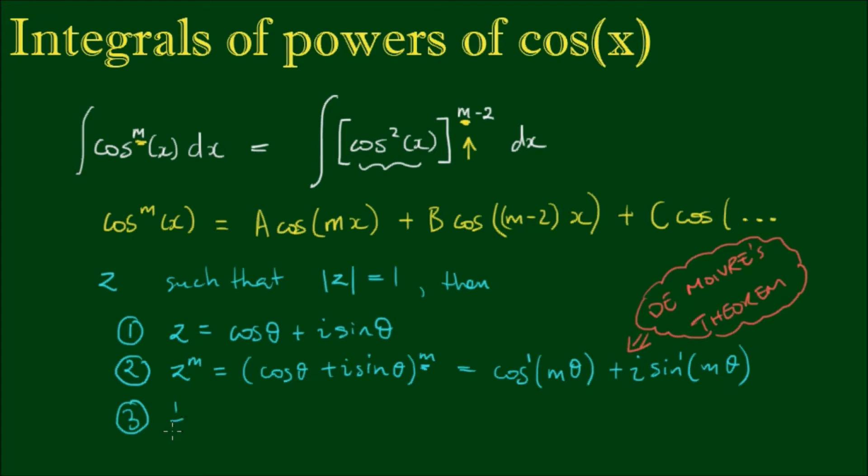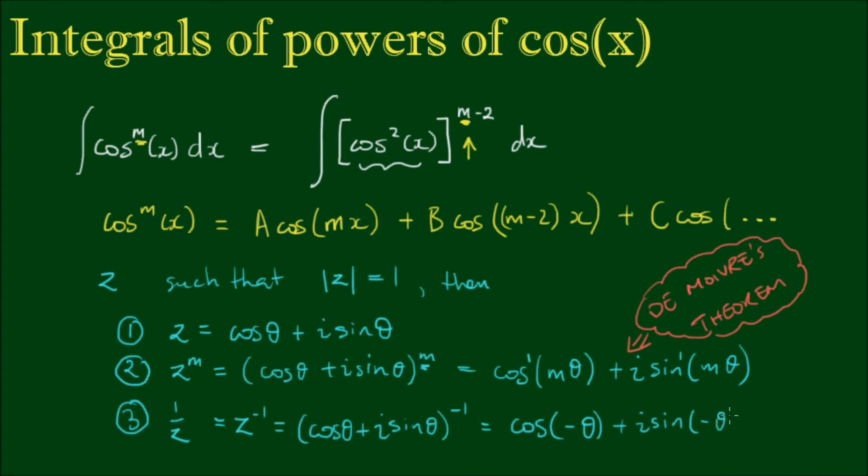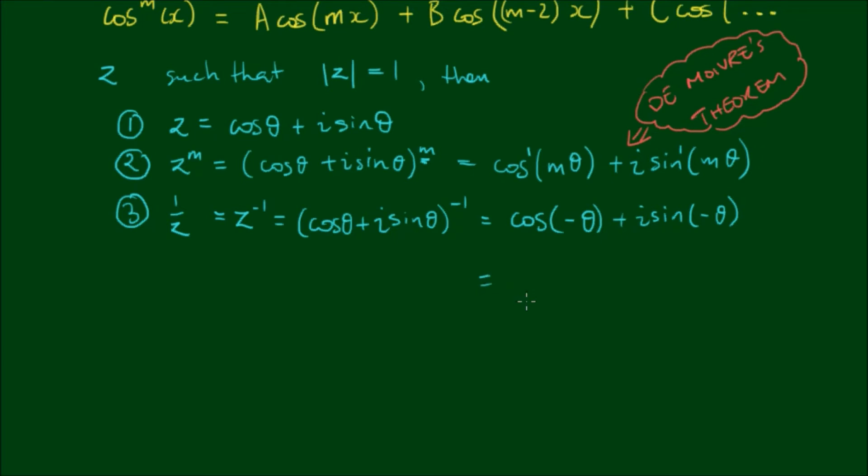For equation 3, if I take the multiplicative inverse of the complex number or z to the negative first power, De Moivre's theorem applies here as well. So we have cosine of negative theta plus i sine of negative theta. Now since cosine is an even function, cosine of negative theta equals cosine of theta. The sine of negative theta is equal to negative of the sine of theta because it's an odd function.